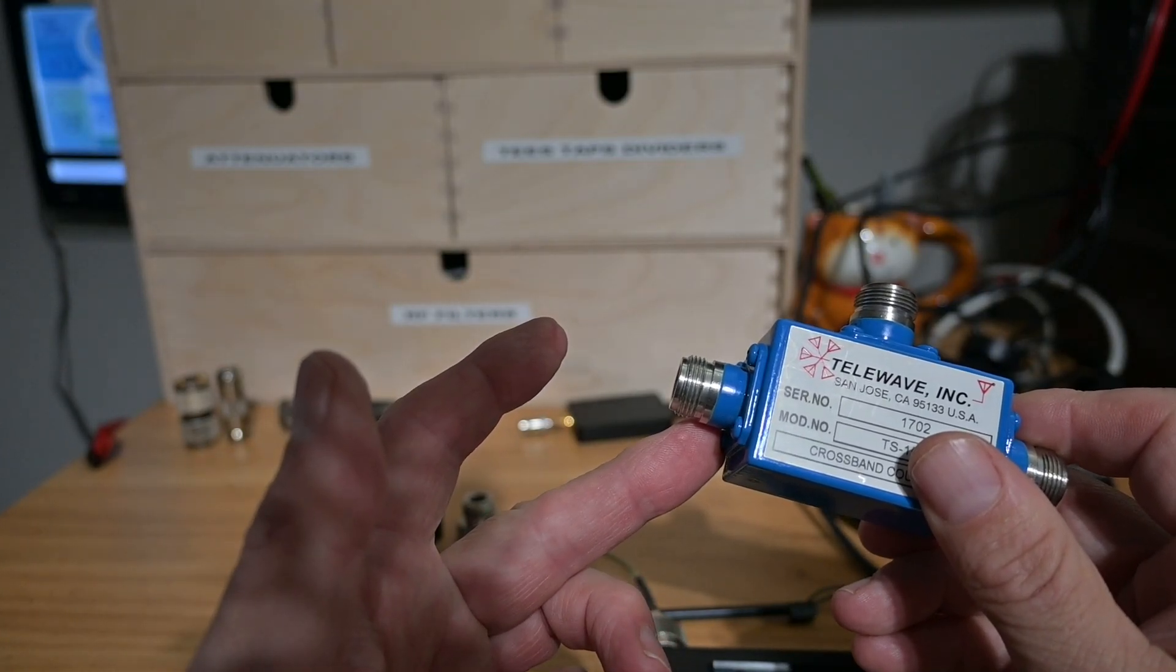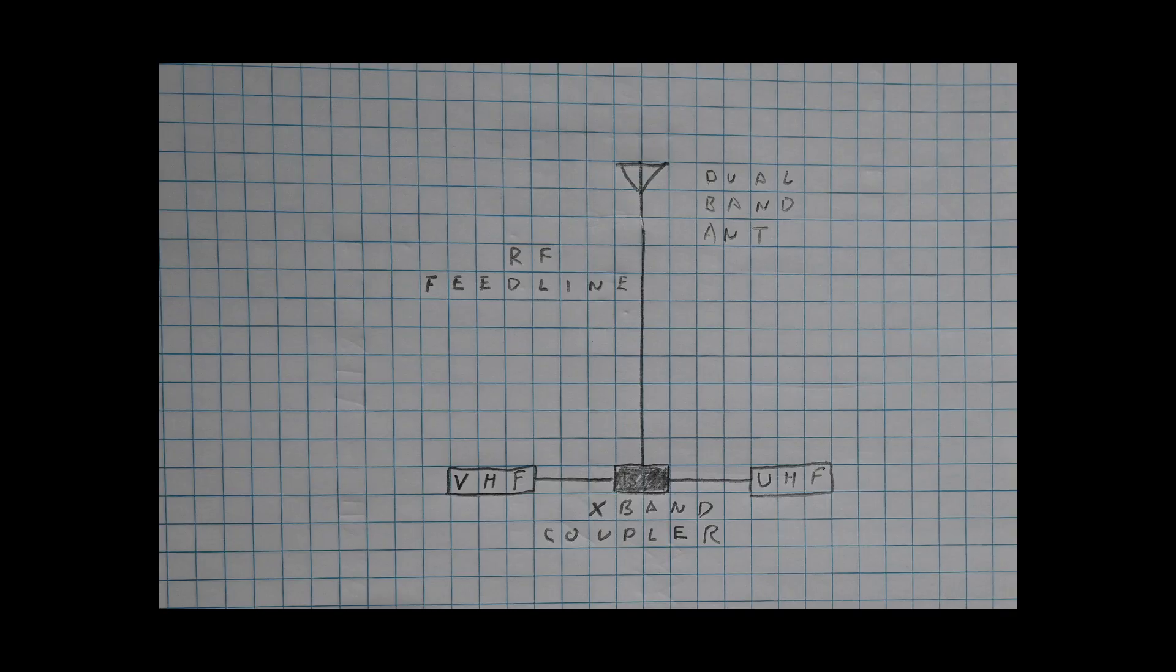In use case one, we're taking two different transmitters of differing bands and feeding the signal into a single feed line and a single antenna supporting both bands of operation. And that's what this device is being used for, and this model TS1545 is for VHF and UHF.